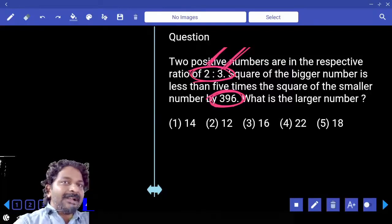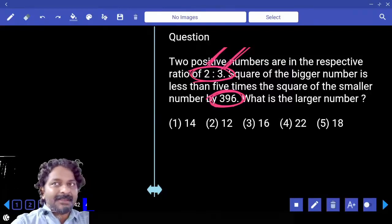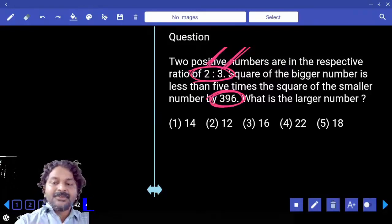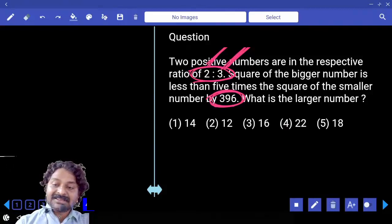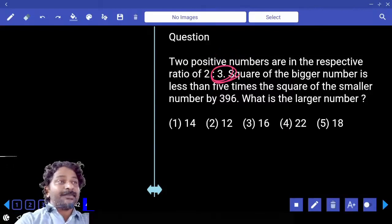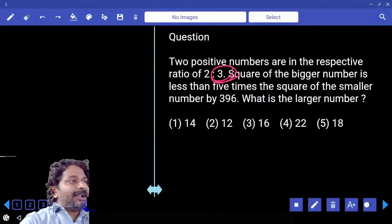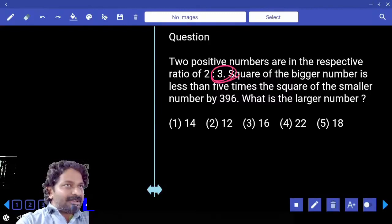Then only the square becomes a 9 multiple, difference becomes a 9 multiple. So when one part value is a 3 multiple, when we calculate 3 parts, that must be 3 into 3 multiple. Has to be a 9 multiple. There is only one.